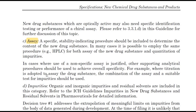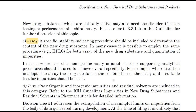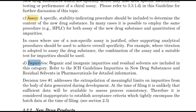For identification and content of new drug substances, a stability-indicating procedure is used. It is possible to employ the same procedure — for example, HPLC — for both the assay of the new drug substance and the quantification of impurities. Where use of a non-specific assay is justified, other supporting analytical procedures should be used to achieve overall specificity. For example, if titration is adopted for the assay of the drug substance, the combination of the assay with suitable tests for impurities should be used.